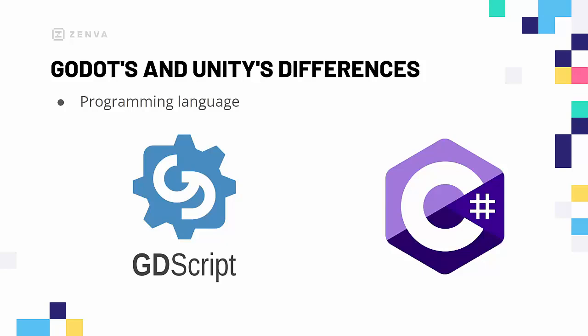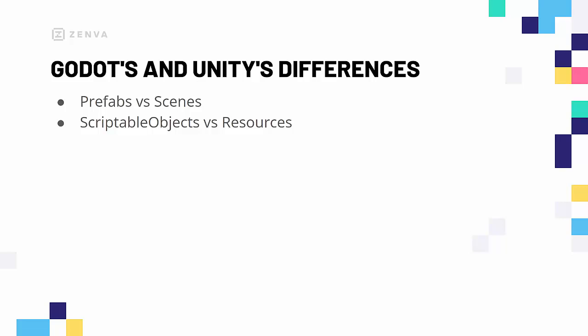Regarding programming languages, Godot supports many, but it is still recommended to learn the basics of GDScript, as it is used in the docs and most projects. Godot officially supports C# and C++, and the community has added support for Rust and others. Unity mainly provides support for C#. Another key difference is that prefabs in Unity correspond to separate scenes in Godot. Additionally, scriptable objects in Unity are called resources in Godot, though the way they are created and used is quite similar in both.